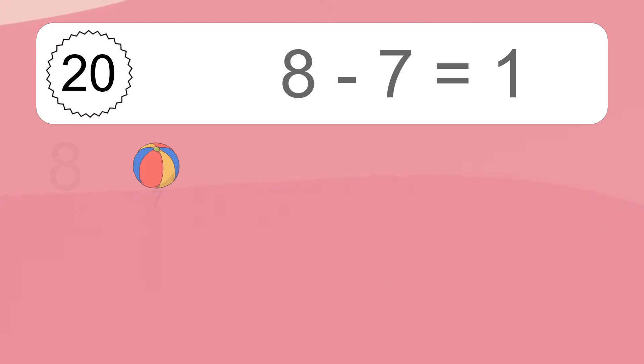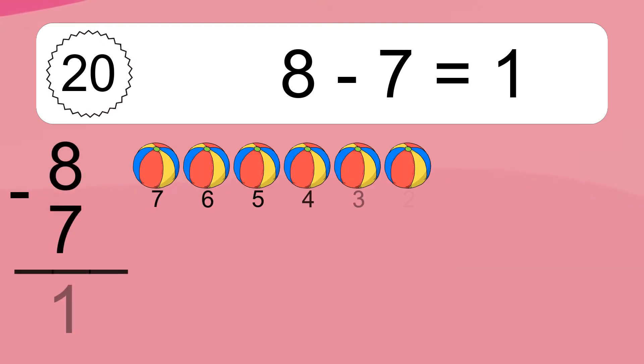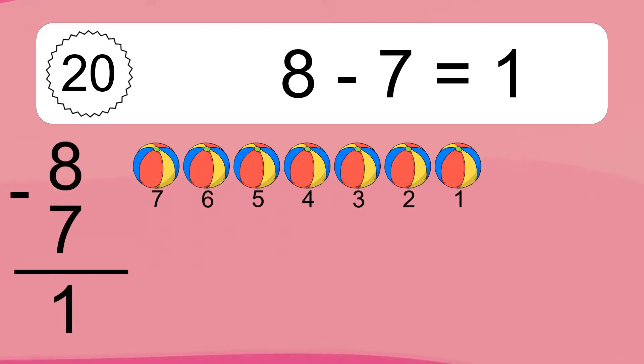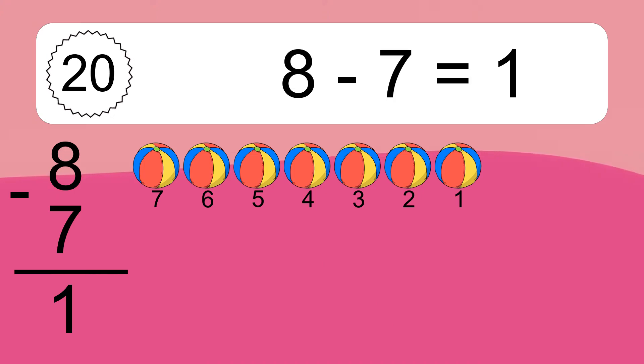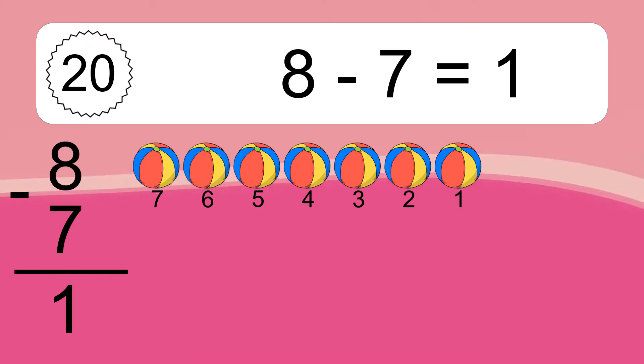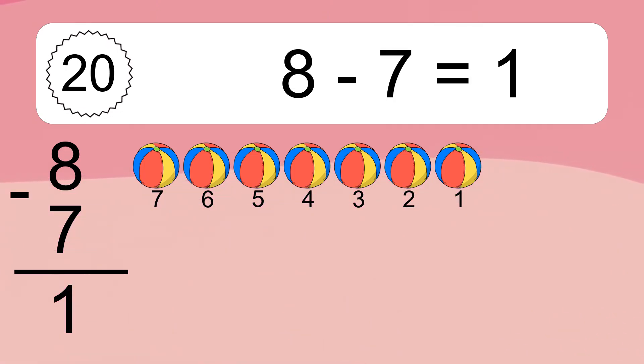8 minus 7 equals what? 8 minus 7 equals 1. Let's count it: 7, 6, 5, 4, 3, 2, 1.